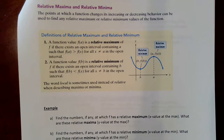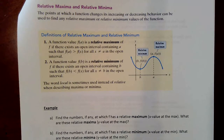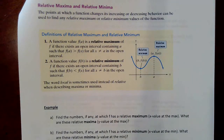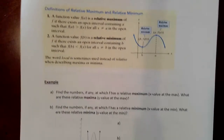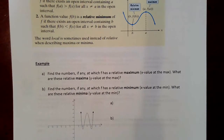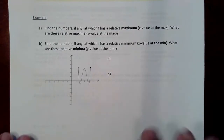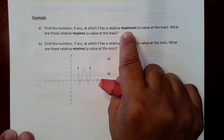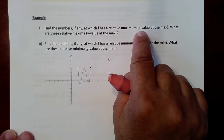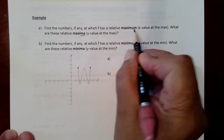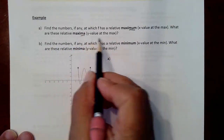Now we're going to talk about how to find a relative max and a relative min. The relative min is the low point and relative max is the high point. Pay attention to the phrasing: when they say "relative maximum," they're looking for the x-value at the max; when they say "relative maxima," they're looking for the y-value at the max.